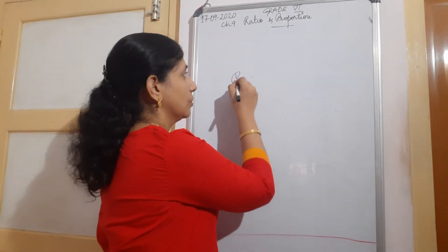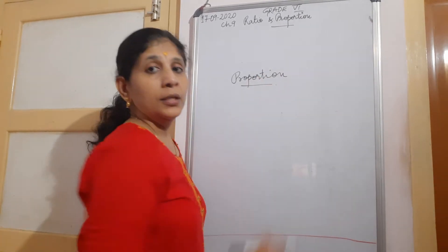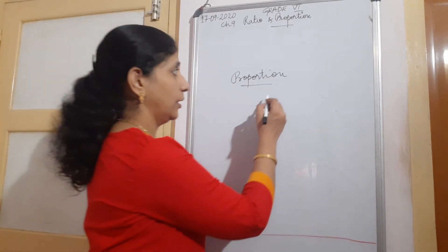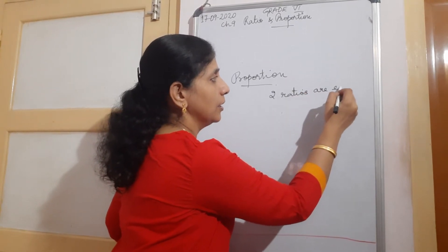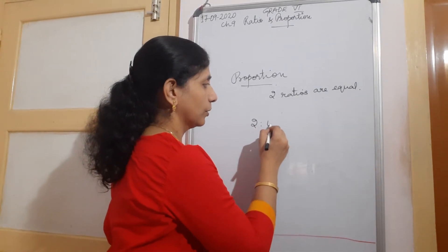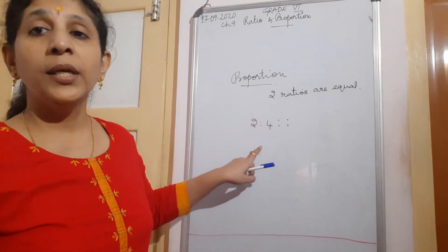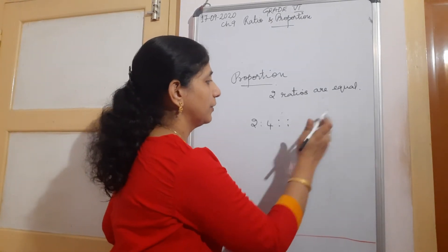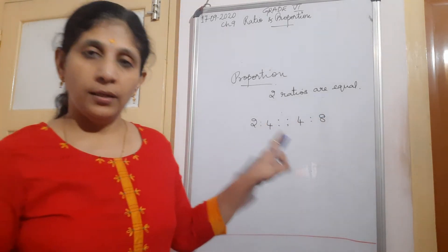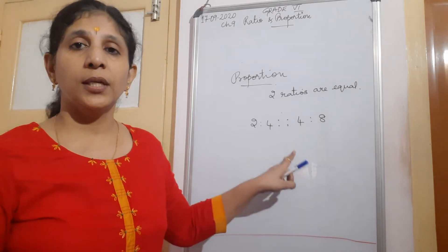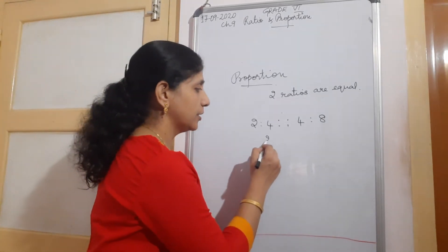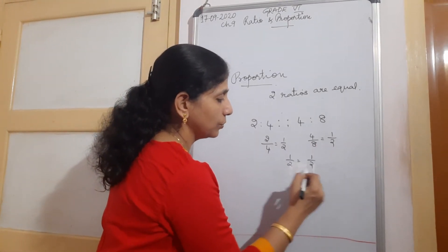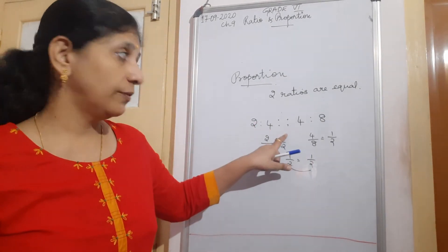Now we will go to the next topic - proportion. When can you say ratios are in proportion? Ratios are in proportion when both ratios are equal. In proportion you will put 4 dots instead of 2 dots used for ratio. So 2 ratio 4 is in proportion with 4 ratio 8. We can verify: 2 by 4 is 1 by 2, and 4 by 8 is also 1 by 2. So 1 by 2 equals 1 by 2 - they are in proportion.